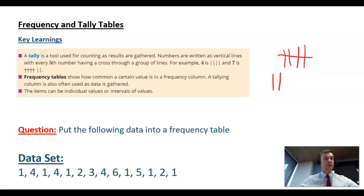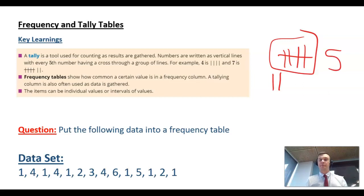Now the difference between that and a frequency table is that a frequency table shows how common a certain value is in a frequency column. If we saw that tally mark as one example, the frequency is actually 5. It's effectively just writing the value of how many tallies there are in a certain section. The items can be individual values or intervals of values.